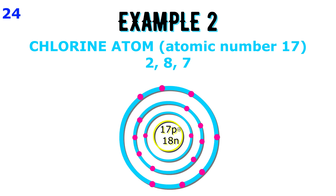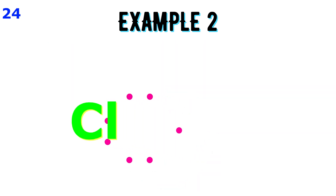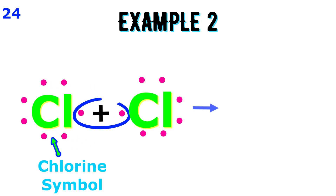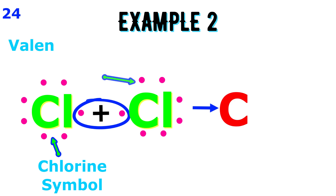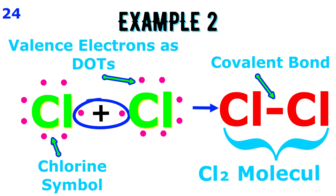Chlorine: A chlorine atom has seven electrons in its outermost shell. In order to complete its octet and attain the configuration of argon, it shares one electron with another atom of chlorine and forms a covalent molecule. The shared pair of electrons is counted for both atoms. One pair of shared electrons is shown by a single line and is called a single covalent bond.